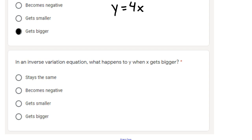In an inverse variation equation, it's the opposite. The form of the equation is k divided by x, k could be any number you like, 12 divided by x.